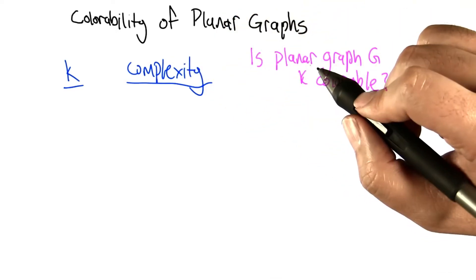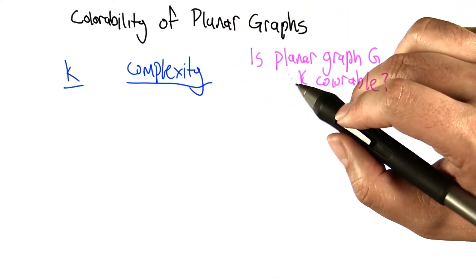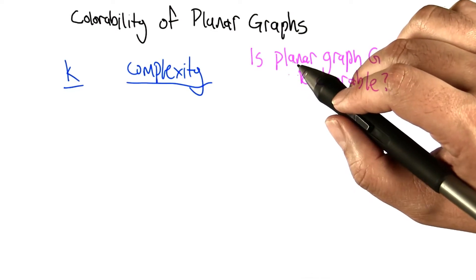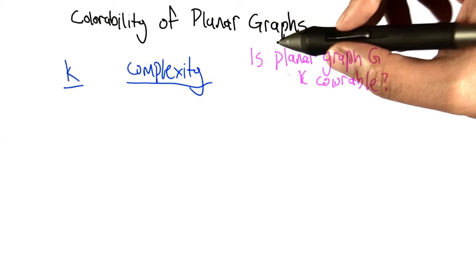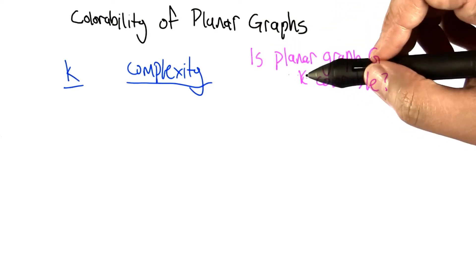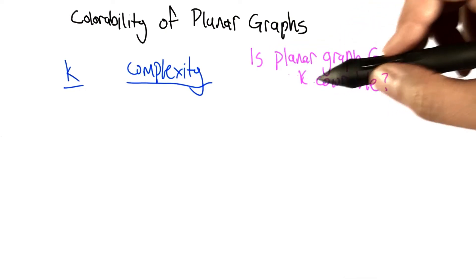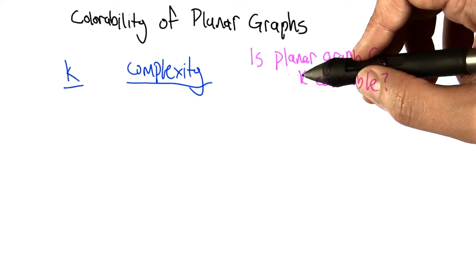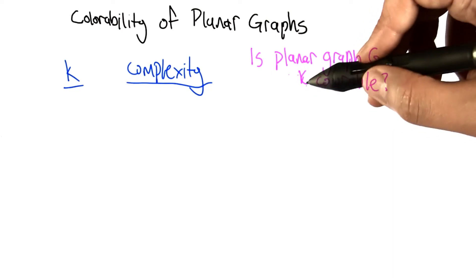I want to describe this next result just because it shows how weird computational complexity results can be. Let's think about the colorability of planar graphs. Here's a decision problem: we're given a graph G and a number K. Is planar graph G K-colorable? Let's look at how the difficulty of the question differs as we change K.